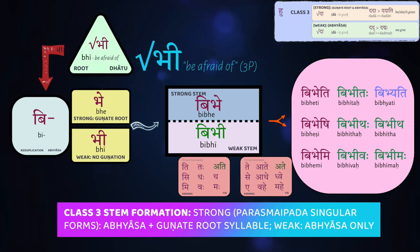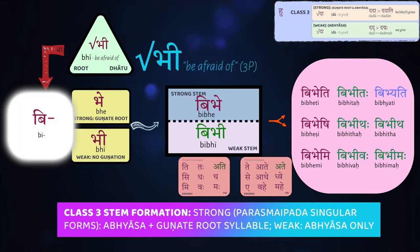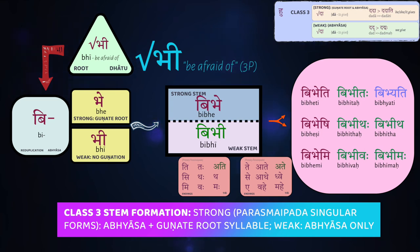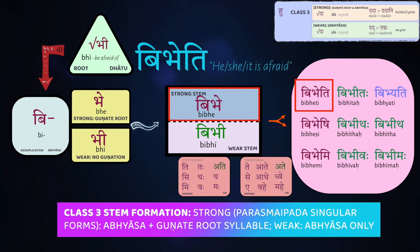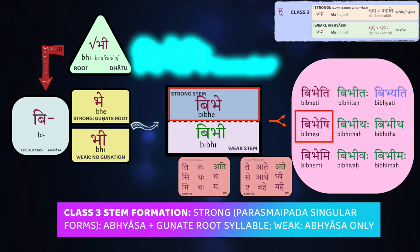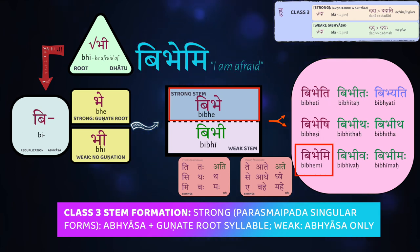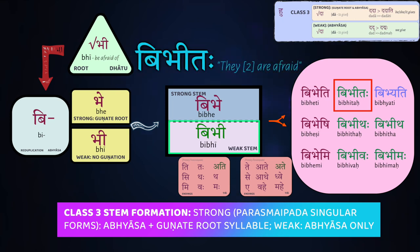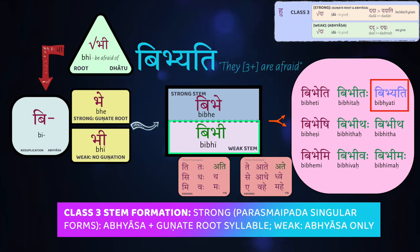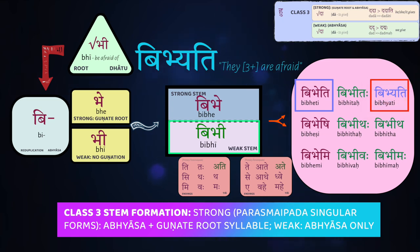An important Class 3 verb is bhī, meaning 'to be afraid.' The reduplication again loses aspiration and shortens the vowel, giving bi-bhi. When you gunate you get the strong stem bibhe, so bibheti — 'he, she, it is afraid.' The weak stem remains bibhi: bibhīṣi — 'you are afraid.' Bibhemi — 'I am afraid.' Bibhītaḥ — 'they two are afraid.' Bibhyati — 'they three or more are afraid,' again with the dropped N, looking very close to the singular bibheti. Very easy to make this mistake.